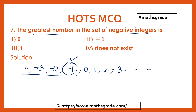Minus 1 is the greatest number from the negative integers. The greatest number in the set of negative integers is minus 1. So option 2 is correct.